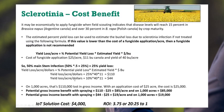When you look at the cost-benefit of sclerotinia, it's quite significant in terms of loss of yield and loss of profit on a particular farm. The estimated percent of yield loss can be used to estimate the bushel loss due to sclerotinia infection if not treated, using the following formulas. If the value is lower than the cost of the fungicide protection application per acre, then a fungicide is not recommended. Yield loss per acre equals the potential yield loss times the estimated yield times the dollars per bushel. So if we have a cost of fungicide at $25 an acre, $11 per bushel, and a 40-bushel crop, we can work out the formula.